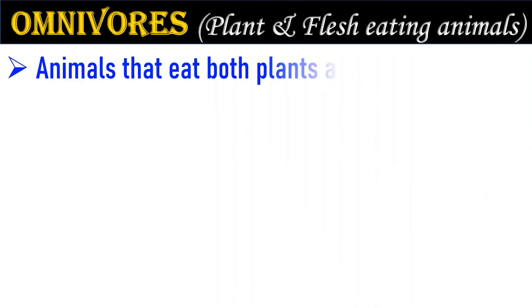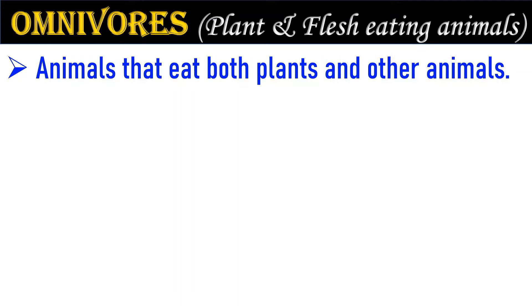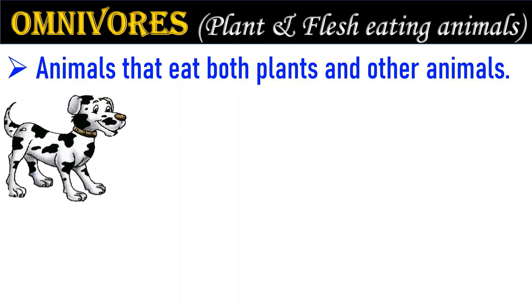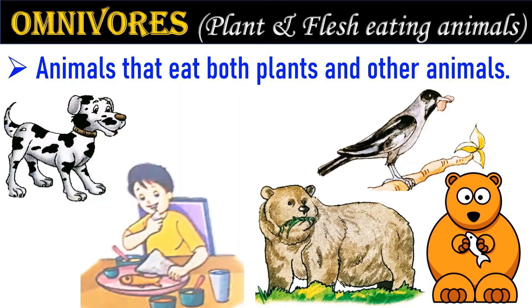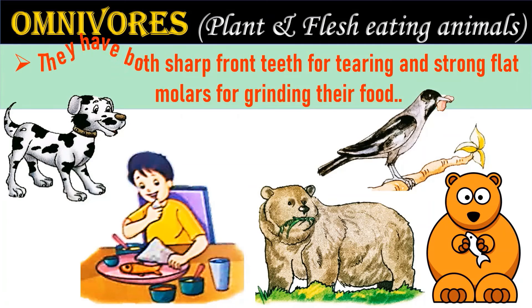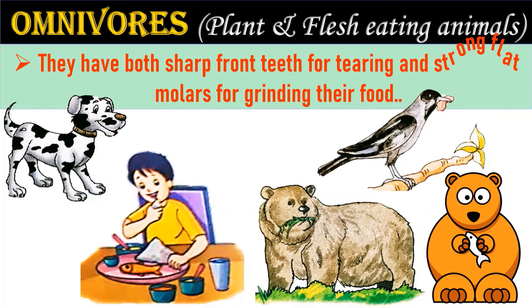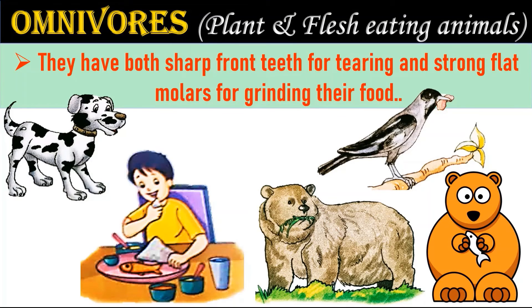Next is omnivores. Animals that eat both plants and other animals are called omnivores, such as dog, crow, bear and human beings. They have both sharp front teeth for tearing and strong flat molars for grinding their food.